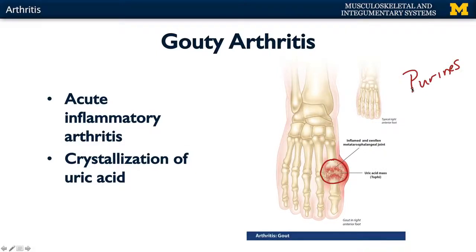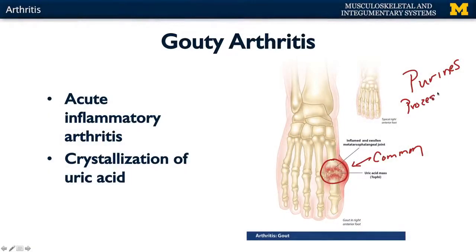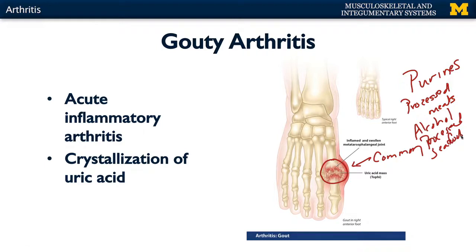The metatarsophalangeal joint is the most common area for the presentation of gouty arthritis. Diets high in purines include things like processed meats, alcohol, and processed seafood. So individuals with diets high in deli meats and alcohol are more likely to develop gouty arthritis. You can see a complete breakdown of the cartilage and a buildup of uric acid in that region, causing inflammation of the entire area.